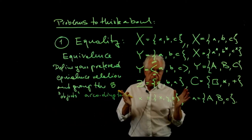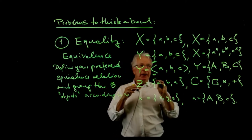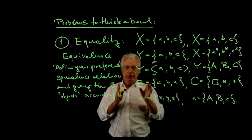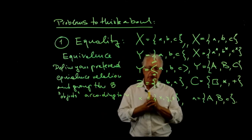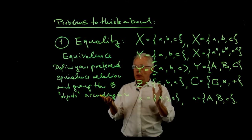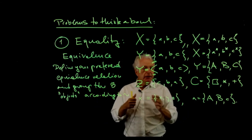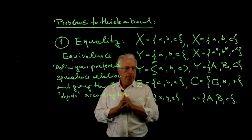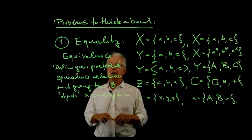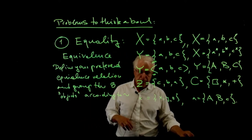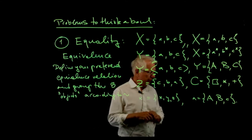For example, you could say: if the elements are the same but the name of the object is different, I declare it equivalent. Or you could say: I declare it equivalent if the cardinality is the same. Please think about it — that's problem number one, and we will make it more precise later on.